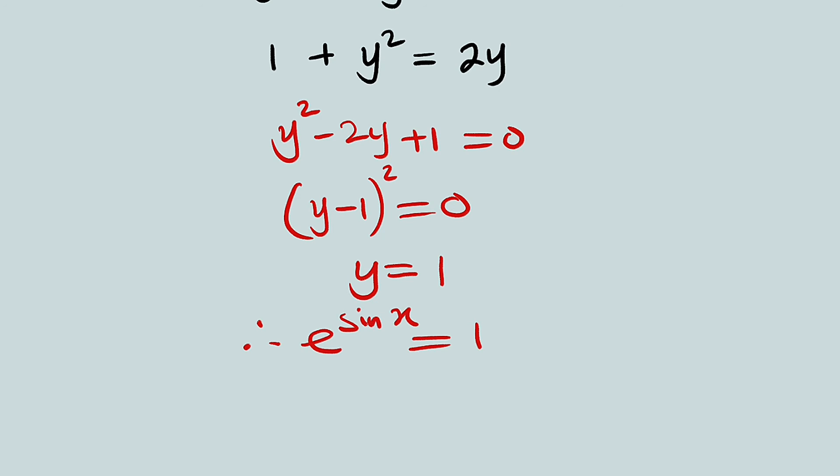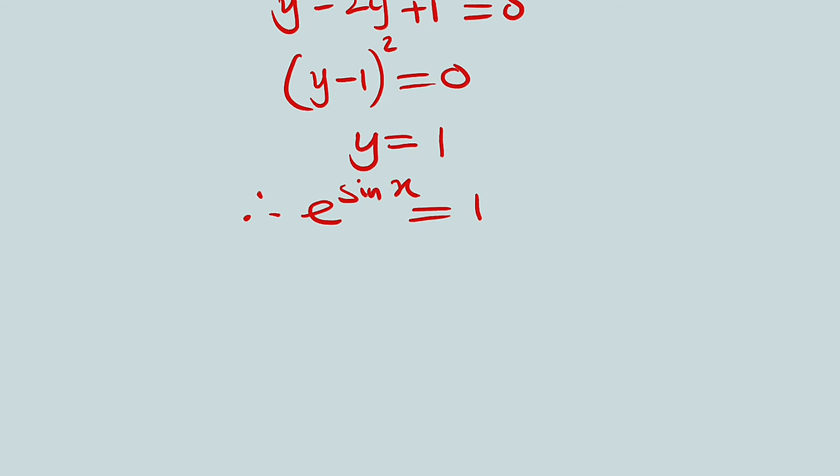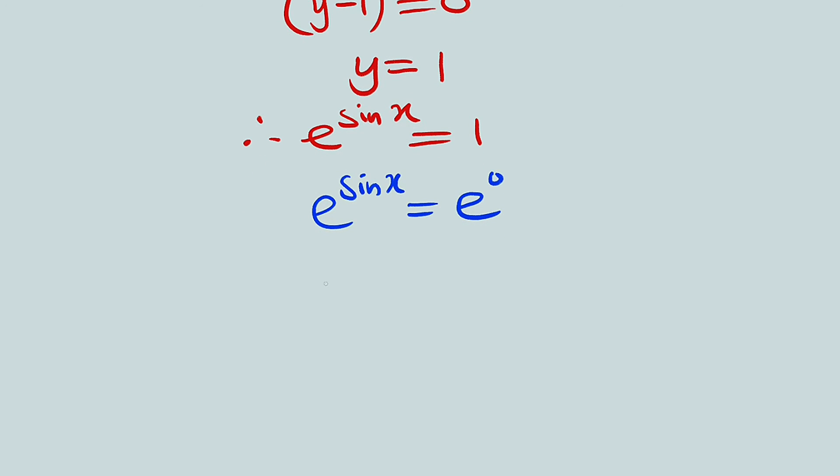From here, we know that e to the power of 0 will be equal to 1. So, instead of 1, we can write it as e to the power of 0. Therefore, e to the sine x is equal to e to the power of 0. So, since the bases are the same, we can now set the powers to be the same as well. So, sine x is equal to 0.